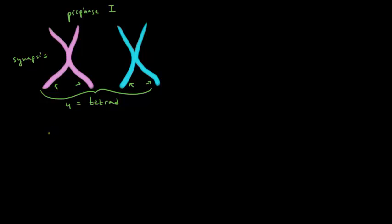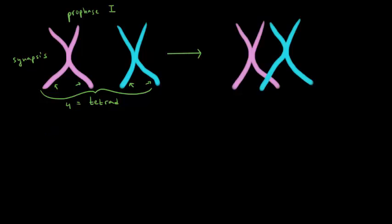So during synapsis the homologous chromosomes will get a little bit closer to each other, something like that. And at a certain spot they might actually cross over or overlap. So I'm going to circle that spot, and that's called the chiasma.